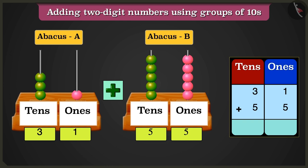We will add the numbers in the 1s box first, that are 1 and 5. 1 1s added to 5 1s, will make 6 1s.